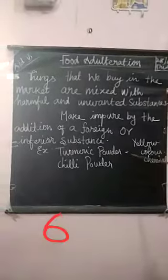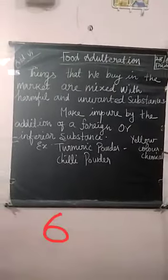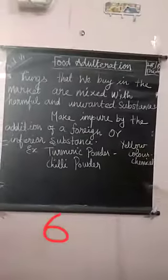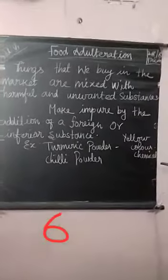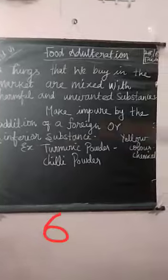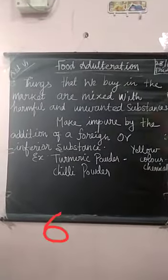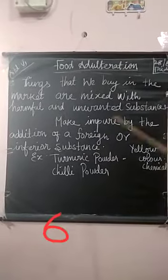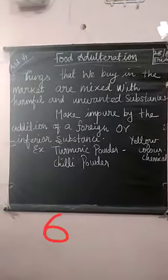Examples of food adulteration: in turmeric powder, they add yellow color chemicals. In chili powder, they add red color chemical substances. In pepper, they add papaya seeds.